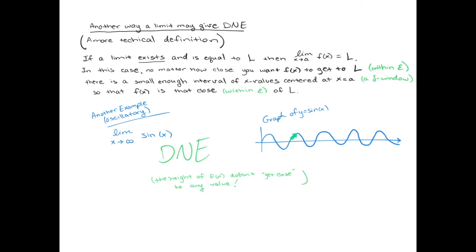But the thing is is that it never gets kind of infinitely close or asymptotically close to 1. Every time the height of the graph gets close to 1, then it shoots back down to negative 1. It goes to 0. It has all these other numbers. It doesn't get infinitely close to 1. It continues to oscillate up and down and up and down and up and down. So it doesn't approach anything. So this is a different way that a limit could not exist. And it all comes back to this more technical definition of a limit.